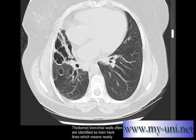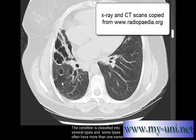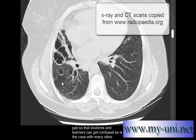Thickened bronchial walls are often identified as tram track lines. Here is a good example — this tram track line shows nearly parallel walls instead of tapering down towards the end. The same applies here; this is a huge bronchus.